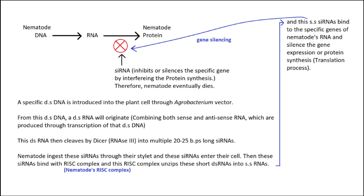A specific double-stranded DNA is introduced into the host plant cell through an Agrobacterium vector. From this double-stranded DNA, a double-stranded RNA will originate, combining both sense and antisense RNAs produced through transcription of that double-stranded DNA. This double-stranded RNA is then cleaved by Dicer — a type of RNase III endonuclease — into multiple 20 to 25 base-pair-long siRNAs. The nematode ingests these siRNAs through its stylet, and they enter its cells.